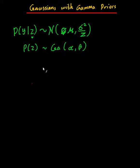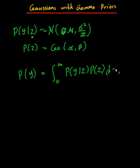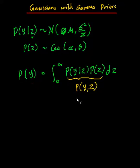I'll write out what the prior and the y given z is. Essentially what we want to get is the distribution of y, and to do that we're going to integrate over z from zero to infinity of p of y given z, times the probability of z. Basically what we're doing is marginalizing out - this is called marginalizing - because these two combined is simply the joint probability of y comma z.